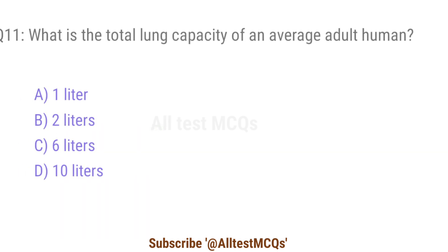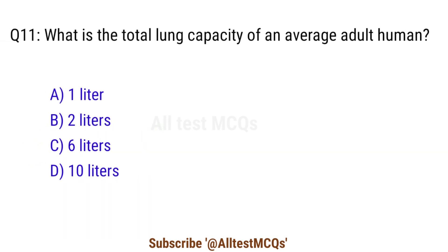Question 11. What is the total lung capacity of an average adult human? The correct answer is option C. Six liters.